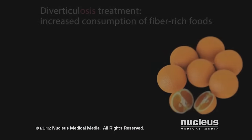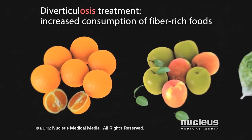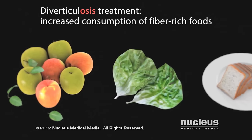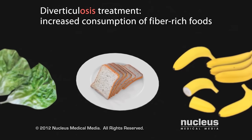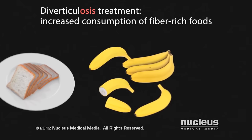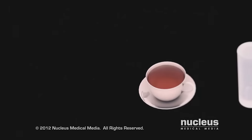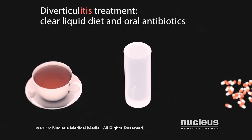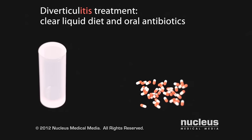The main treatment for diverticulosis is increased consumption of fiber-rich foods to soften and add bulk to stools, which helps stimulate the colon to contract and eliminate them. Other treatments for diverticulitis include a clear liquid diet and oral antibiotics.